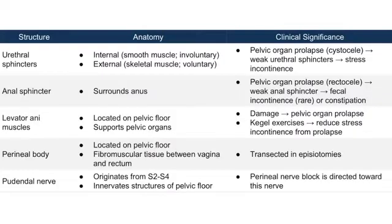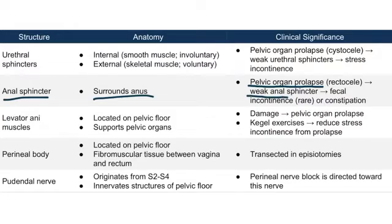Now let's discuss the anal sphincter. In terms of pelvic organ prolapse, the anal sphincter follows a very similar principle to the urethral sphincters. It surrounds the anus, so if there's increased pressure, the anal sphincter will be weak, leading to fecal incontinence — which is rare. More likely, the patient will have constipation.